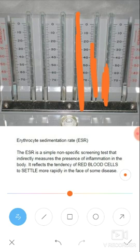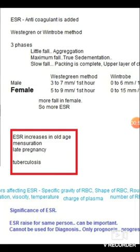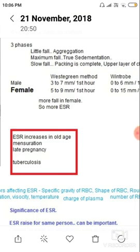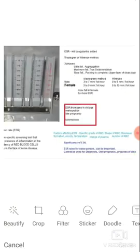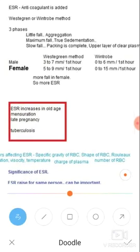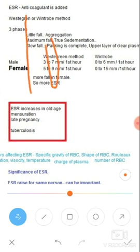The RBCs will sediment faster if there is infection, inflammation, cancer, or pregnancy. The tubes used are Wintrobe tubes or Westergren pipette. The Westergren pipette is a really long one; Wintrobe tube will be a little smaller. You fill the blood and leave it to stand for one hour.